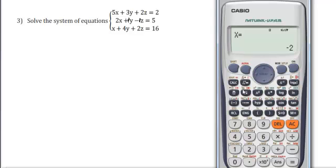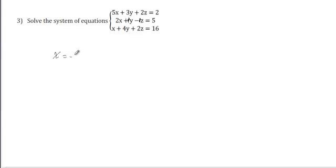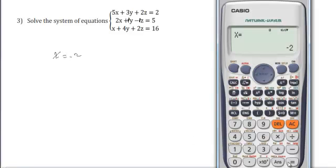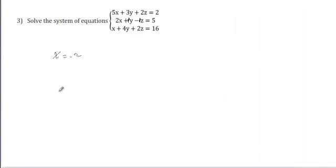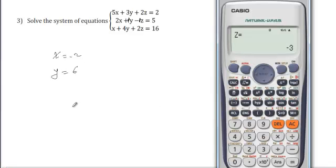We press equal one more time. Then you get X equal minus 2. So we can write X equals minus 2, and press equal one more time. You get Y equals 6, Y equals 6. And last, we press equal one more time. One more time, we get Z equal to minus 3.